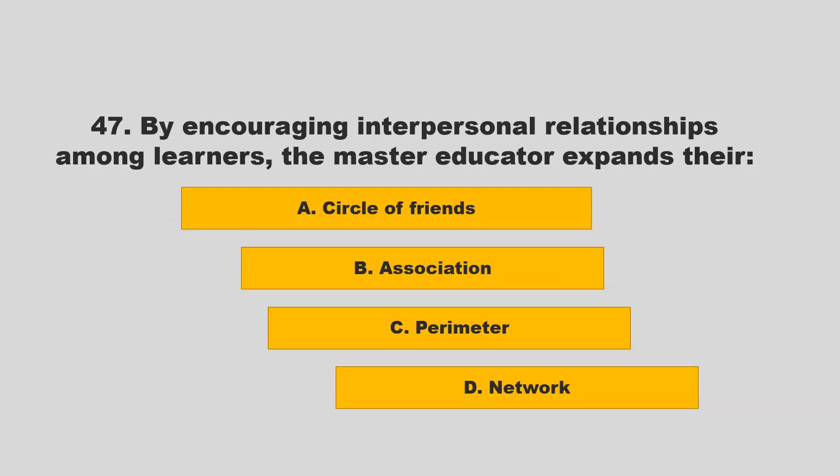By encouraging interpersonal relationships among learners, the master educator expands their: A) circle of friends; B) association; C) perimeter; D) network. If you chose D — network — you are correct.